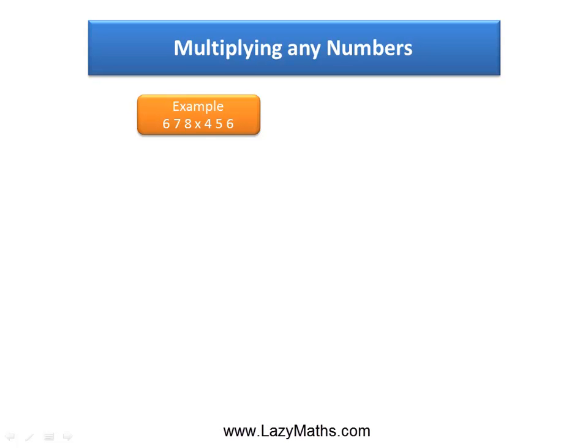Here's an example of multiplying any number using the Trachtenberg speed multiplication method: 678 times 456.